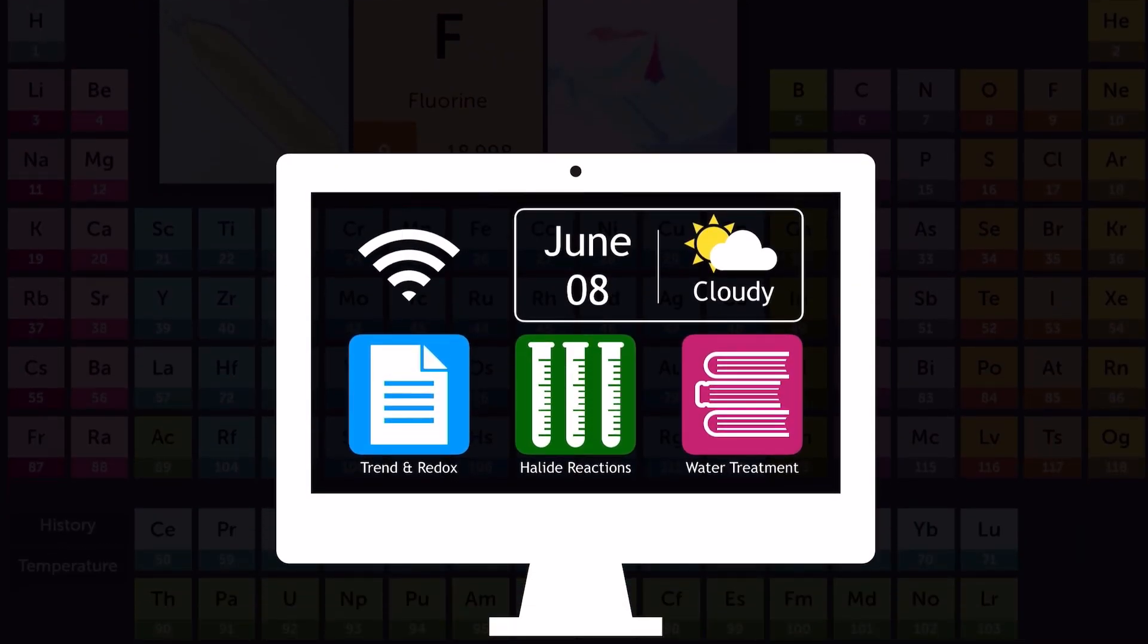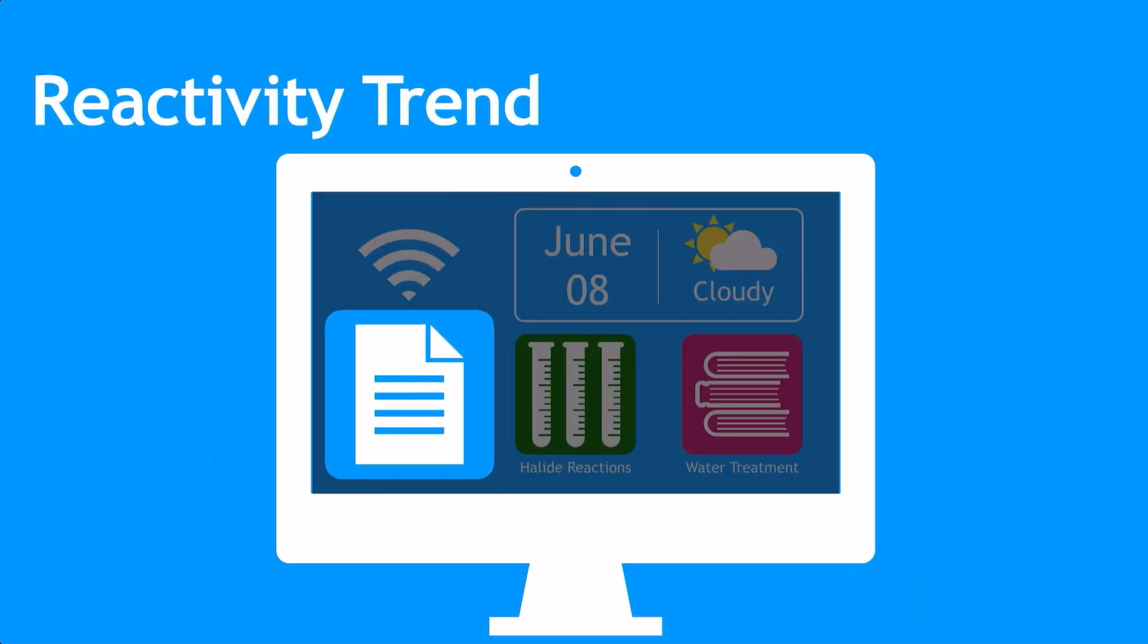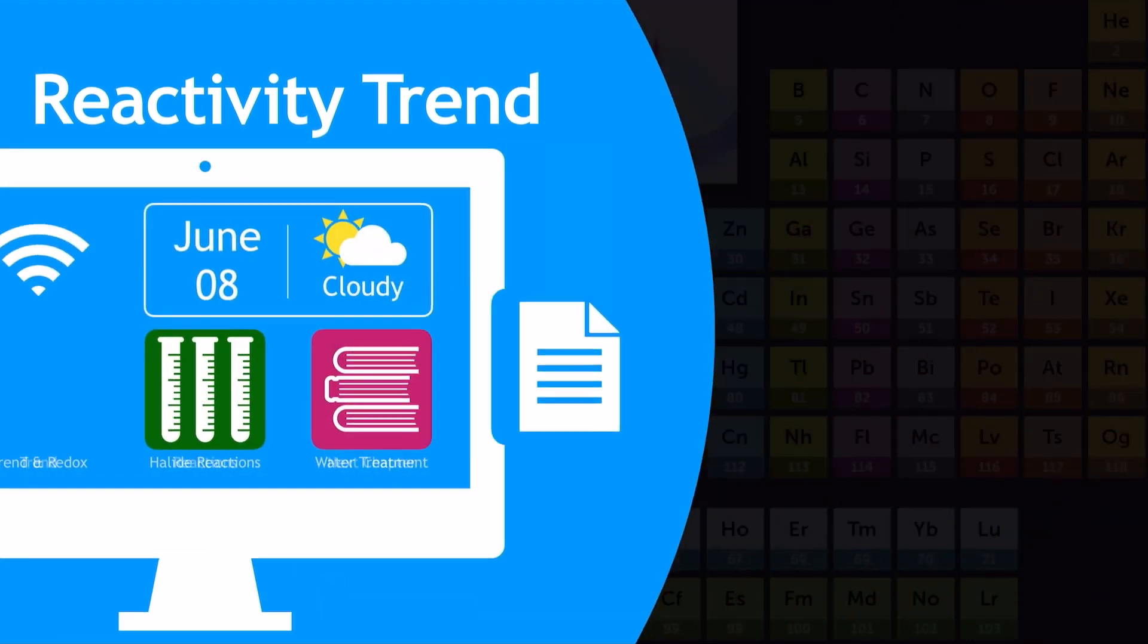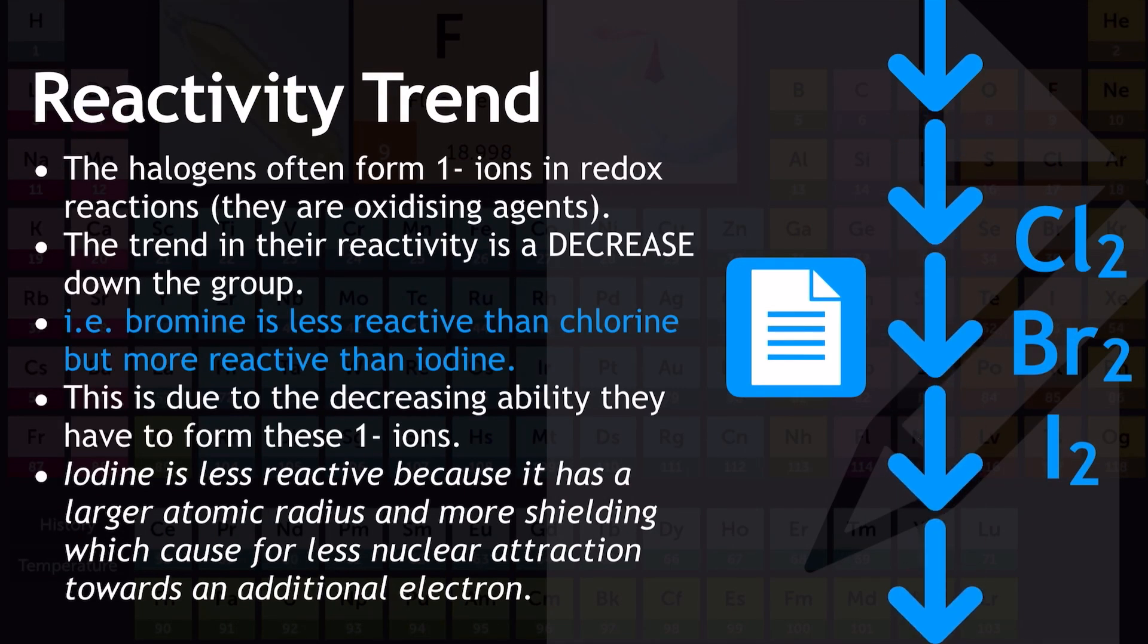Next up, we're going to be looking at the trend in reactivity between chlorine, bromine, and iodine from the halogens group, and we're going to be associating that to redox reactions. We're going to kick off with the reactivity trend of the halogens down the group using redox reactions. The halogens very often form 1- ions in redox reactions, and this is because they are oxidizing agents. The trend in their reactivity down the group is a decrease. So what I mean by that is, for example, bromine is less reactive than chlorine, but more reactive than iodine, and that's because it's in the middle of the three we're going to consider for this trend. And this is due to the decreasing ability they have to form these 1- ions in these redox reactions.